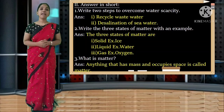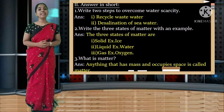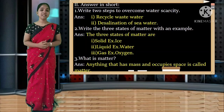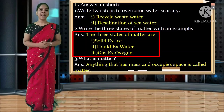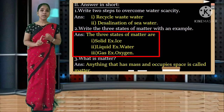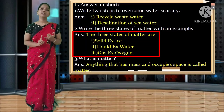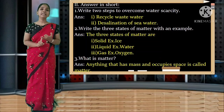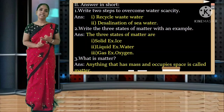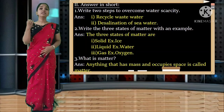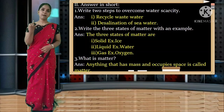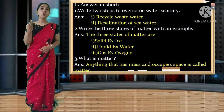Second question: write the three states of matter with an example. The three states of matter are solid, liquid and gas. Solid - example: ice. Liquid - example: water. Gas - example: oxygen. Spelling: solid S-O-L-I-D, liquid L-I-Q-U-I-D, gas G-A-S.